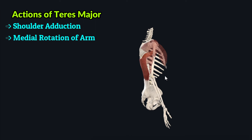Another action performed by the teres major muscle is shoulder extension and hyperextension. In this action, it acts synergistically with the latissimus dorsi muscle and extends the shoulder at the glenohumeral joint.